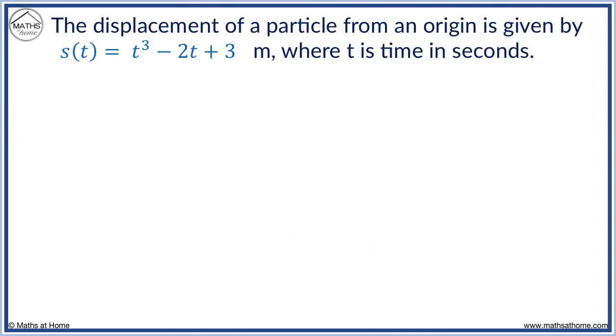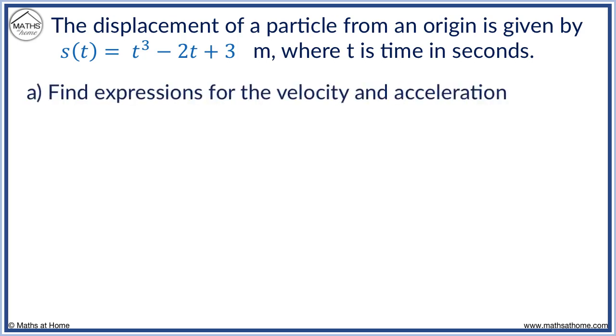The displacement of a particle from an origin is given by S equals T cubed minus 2T minus 3 meters, where T is in seconds. Find expressions for velocity and acceleration.